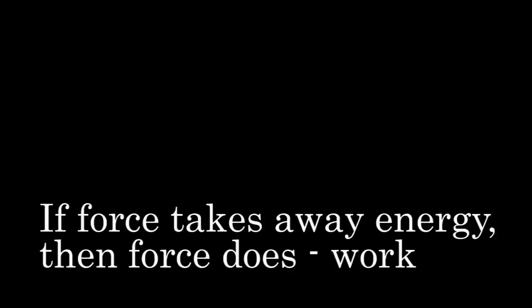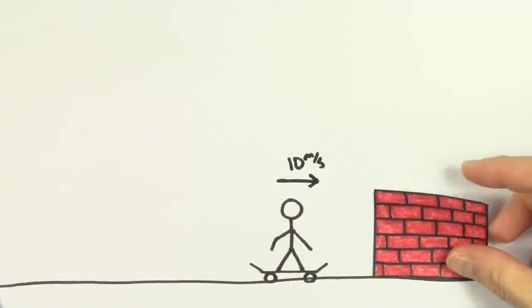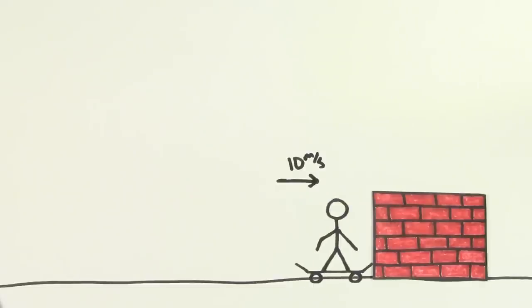And if a force takes away energy from an object, the force is doing negative work on that object. Now imagine that the skateboarder moving at 10 meters per second gets stopped because he crashes into a stack of bricks. The stack of bricks does negative work on the skateboarder because it takes away energy.